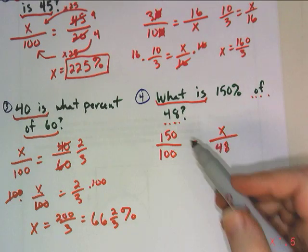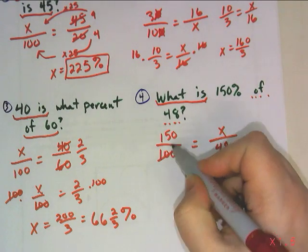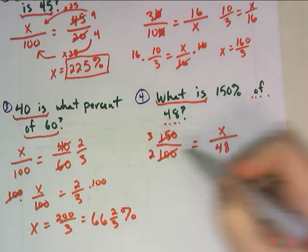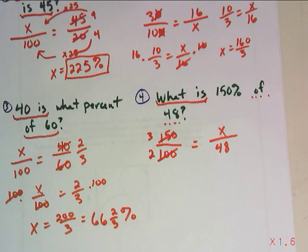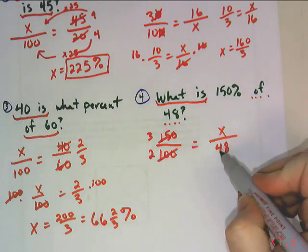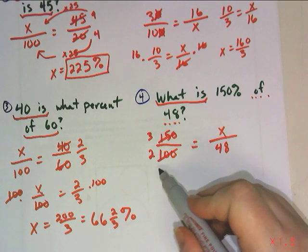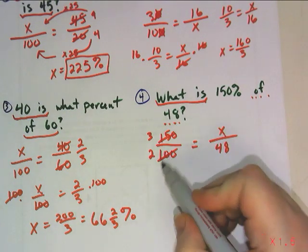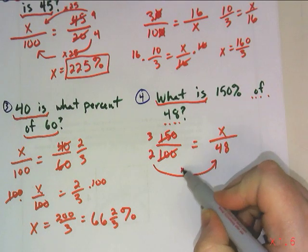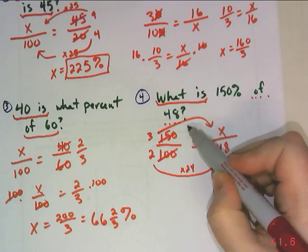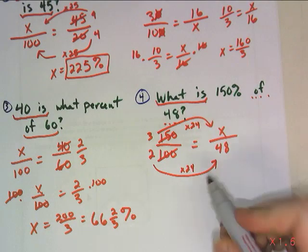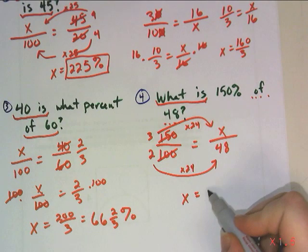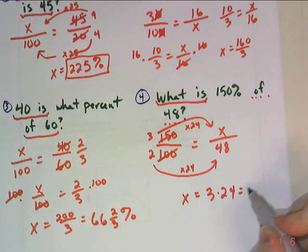Before I solve this, again, I see that this can be reduced. Those are both divisible by 50. And look, those smaller numbers are going to make my work so much easier. To go from 2 to 48, that is going to be times 24. So let's do the same thing at the top. Times 24. X is equal to 3 times 24, which is 72.